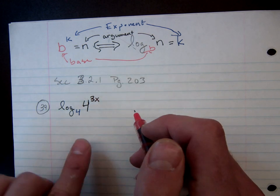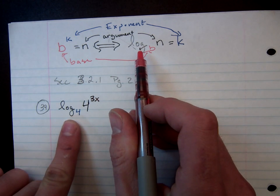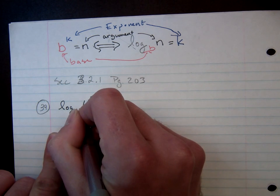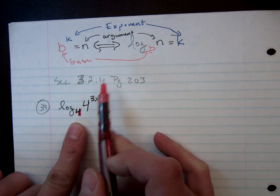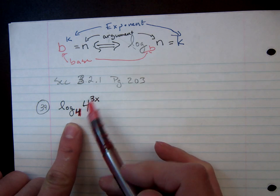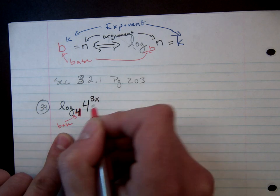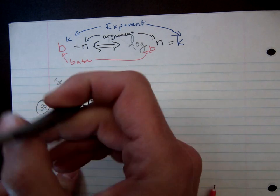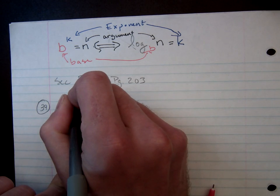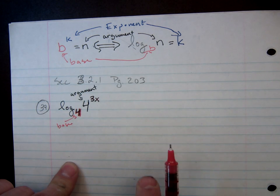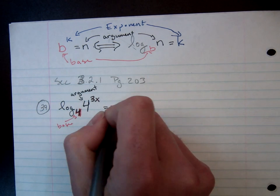So in this case, I'm going to make sure that I have all of my players here. Right? And it looks like I can identify that I have my base here of 4. I have my argument up here. And it appears as though I'm missing something, I'm missing k.